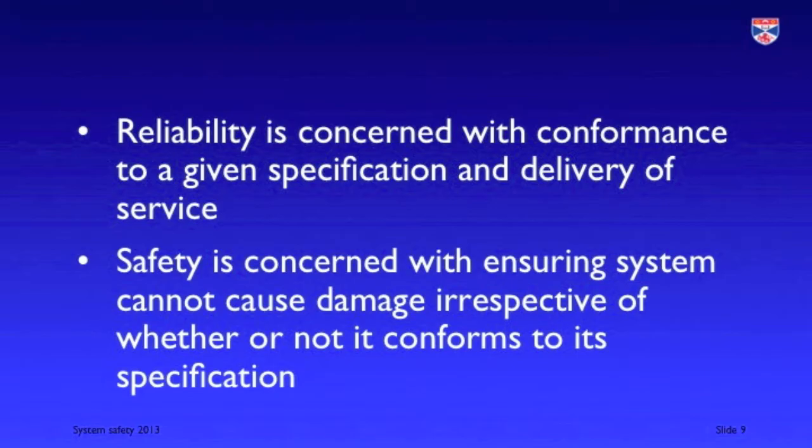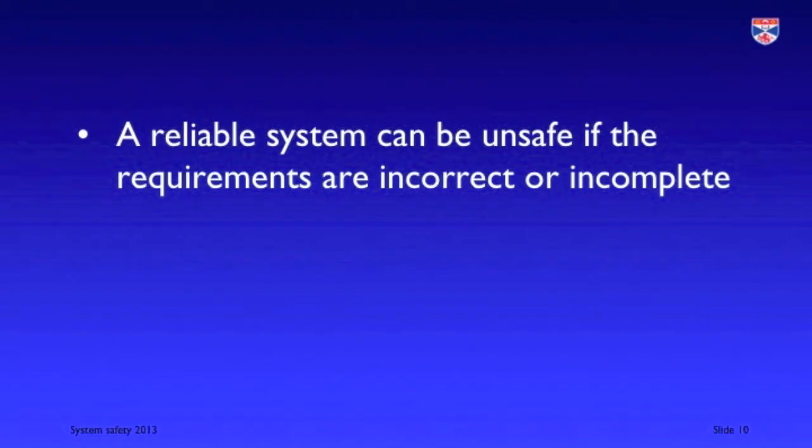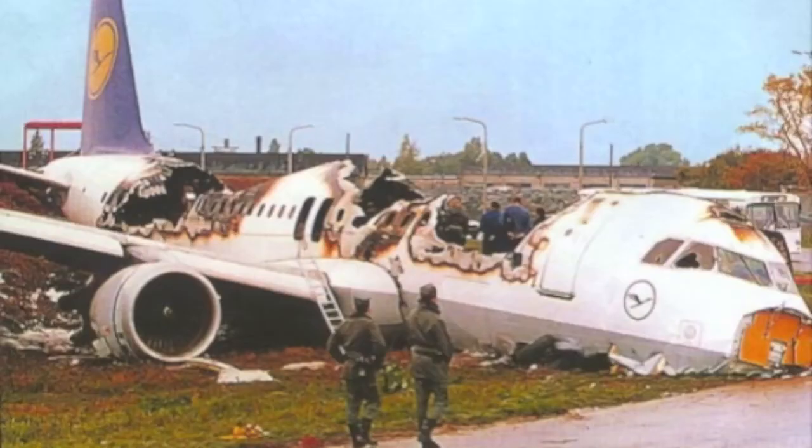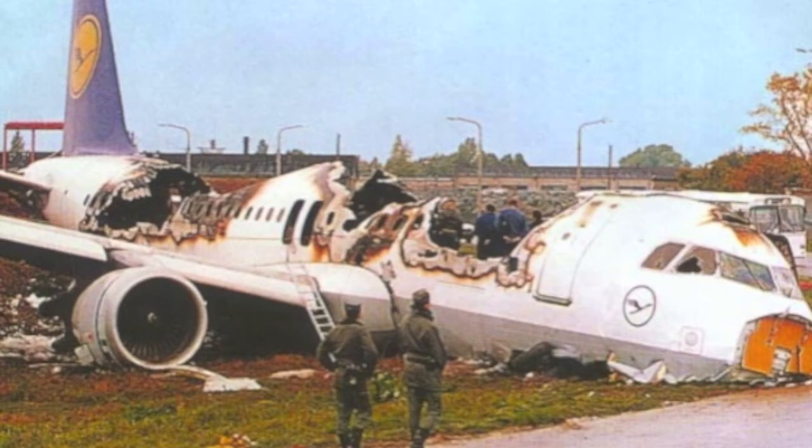The issue we have to address when building safe systems is the possibility that the specification will be incomplete or incorrect. It is perfectly possible for a system that is reliable and certified as reliable to be unsafe. An example is an aircraft accident that happened at Warsaw Airport some years ago, where a system behaved reliably according to its specification but failed to apply the brakes on the aircraft properly, causing it to run off the end of the runway. I will be covering this in a separate video.